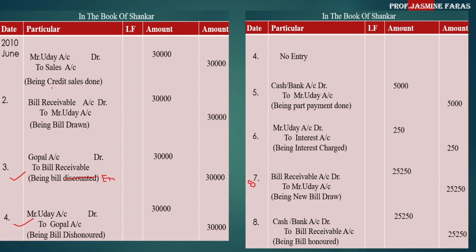The magic only works if you follow the exact steps I told you. Look: in the credit sales entry, Uday is debit. In the next entry, Uday is credit. Here, in the endorse case, Uday's name doesn't change — the receiver and giver are different. In the discounted case, endorsed case, and bills sent for collection case, in the third entry the drawee's name never comes.